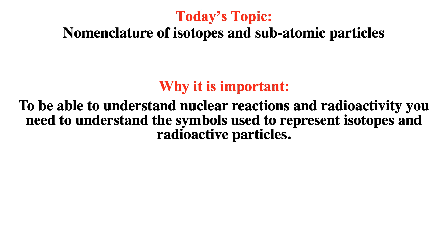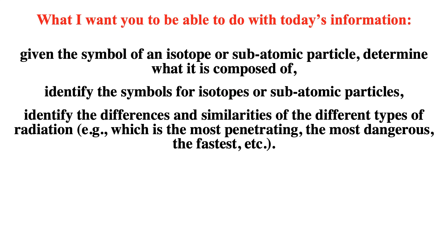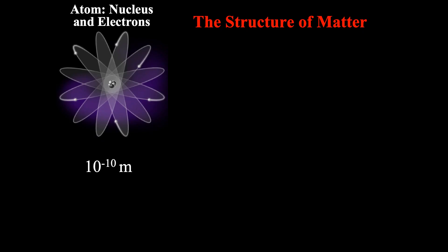This video is on the nomenclature of isotopes and subatomic particles. To understand nuclear reactions and radioactivity, you need to understand the symbols used to represent isotopes and radioactive particles. After watching this video, given the symbol of an isotope or subatomic particle, you should be able to determine what it is composed of, identify symbols for isotopes or subatomic particles, and identify differences and similarities of different types of radiation — which is most penetrating, most dangerous, fastest, etc.